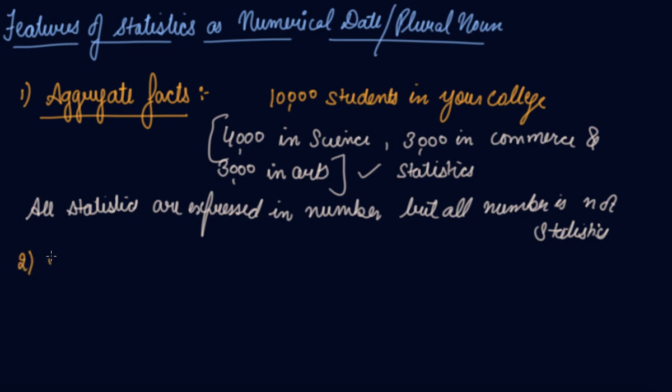Second feature is numerically expressed. Statistics are expressed in terms of number. Qualitative aspects like small or big, rich or poor, etc., are not allowed in statistics. For instance, you can write that the height of Ram is 5 inches, the height of Shyam is 10 inches, and another person you can compare. But if you write it just like 10, 6 statistics, then it is not a statistic. So statistics are numerically expressed.